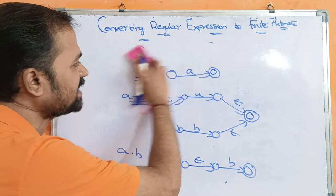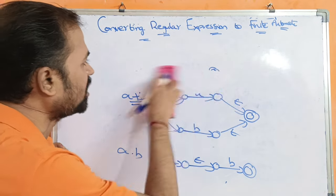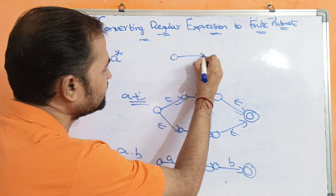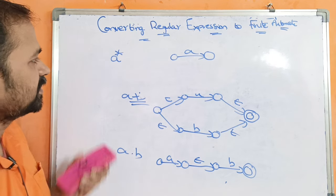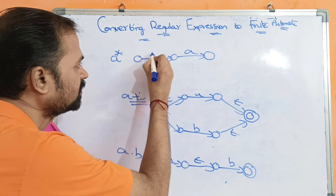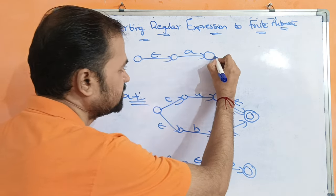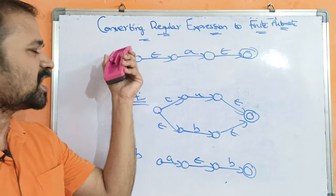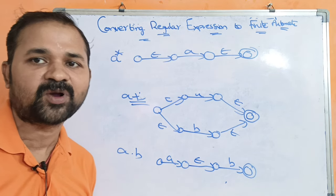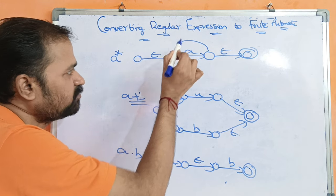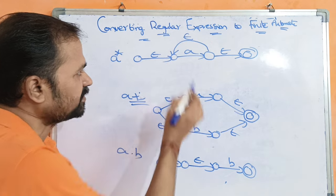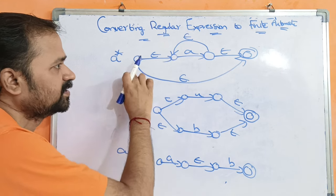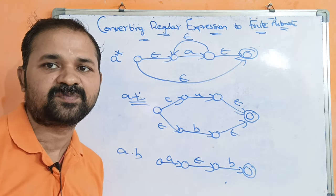The last operation is a star. In order to represent a, we require two states. For applying star, we require two more states. On applying epsilon, we move from this state to this state, and on applying epsilon we go from this state to this state — let it be the final state. Star means zero or any number of occurrences. Zero occurrences means we establish a connection by applying epsilon; for any number of occurrences, we apply epsilon from this state to the final state.